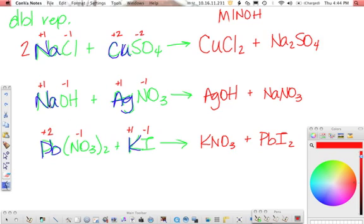Moving on to the next one, starting out with my metals, I have one sodium, one sodium. My next metal is silver, one and one. Then my ions, I've got one hydroxide, one hydroxide, and then I've got one nitrate, one nitrate. So that one is just naturally balanced.